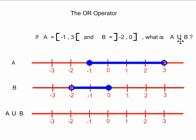When we do a union of A or B, any number that is in A or B is in the answer. For example, zero is in A and B, so it will be in the answer.